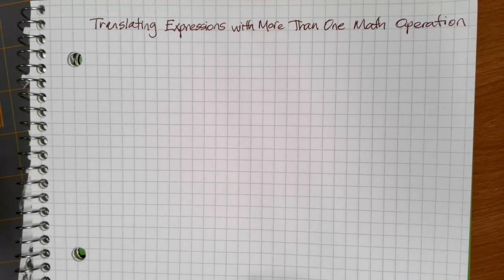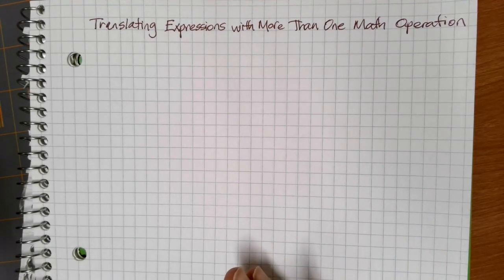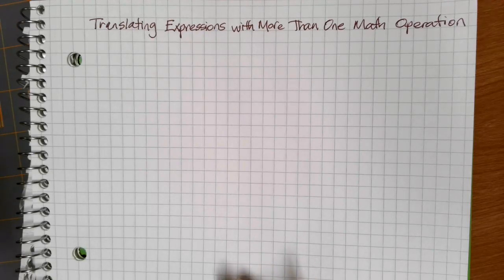Sometimes when we're dealing with math operations, we need to do more than one of them. In these cases, it's really important to determine which operation needs to be done first, and make sure that the way that you're writing the mathematics reflects that.